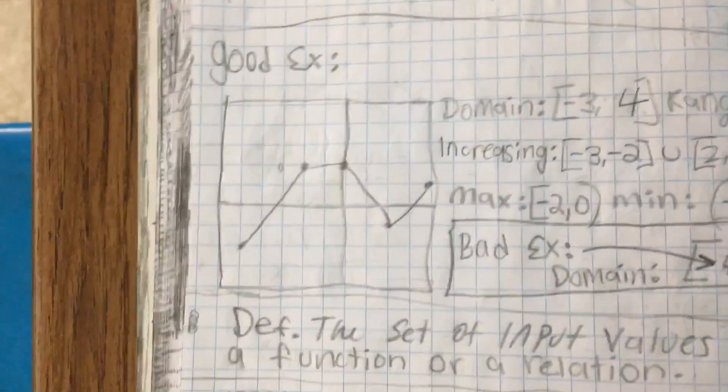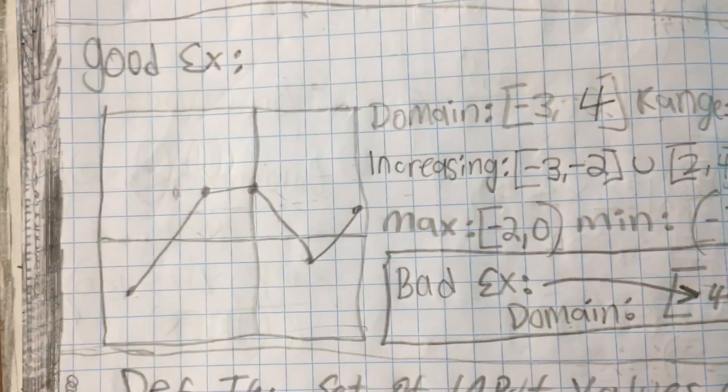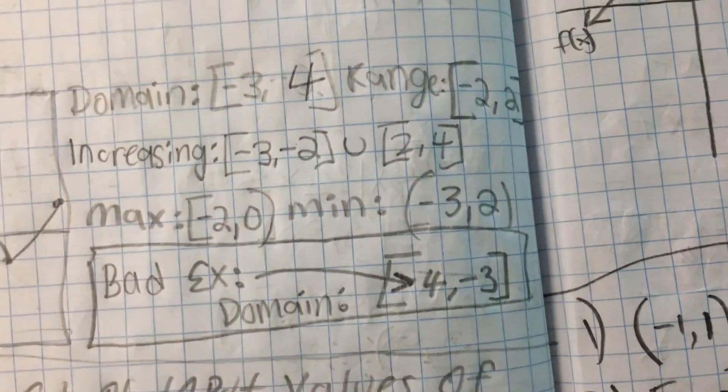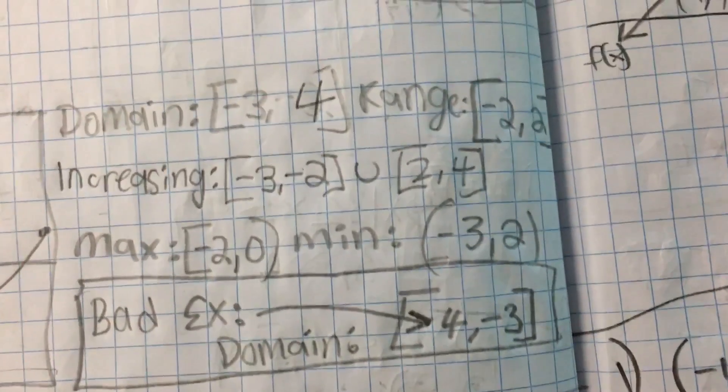Maximum negative 2 comma 0, minimum negative 3 comma 2.